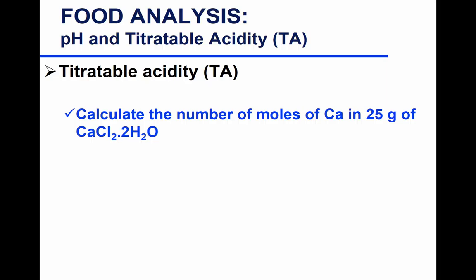Number of moles equals mass in grams over molecular or molar weight in grams per mole. To calculate molecular weight, you need the atomic weights: calcium is approximately 40, chloride is 35.5, and you also account for hydrogen and oxygen from the dihydrate. Knowing this equation and these values, you should be able to calculate the number of moles.